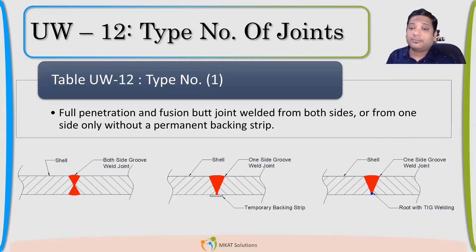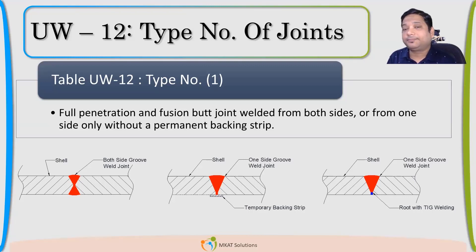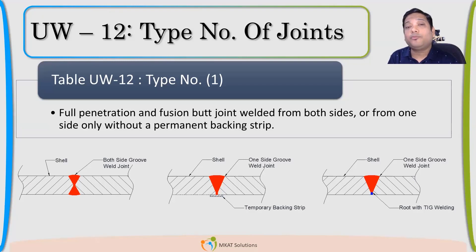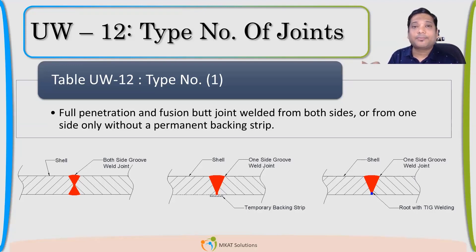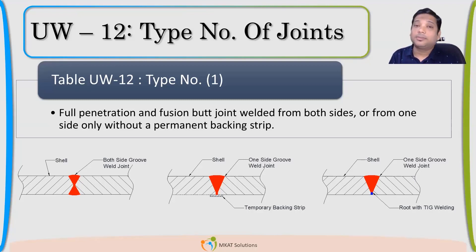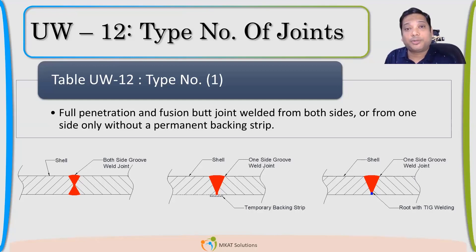When we start learning, we think that if I have full radiography, my joint efficiency will be 1. No, that is not the case. Full radiography will not give you joint efficiency as 1 always. It depends upon which type of weld you are having. So don't always consider that joint efficiency 1 means full radiography is applicable, or that full radiography means joint efficiency 1.